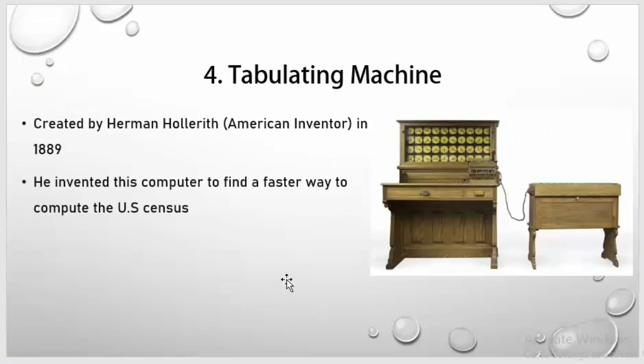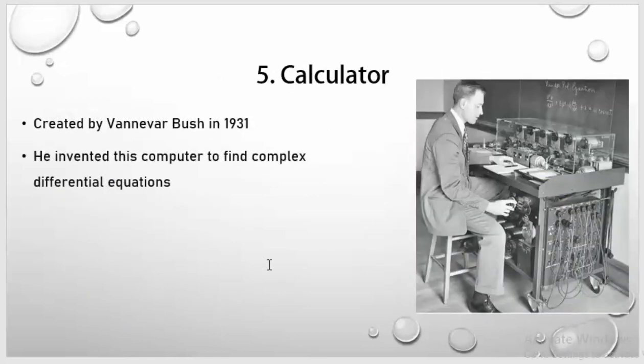Fourth one is Tabulating Machine. It was created by Herman Hollerith. He was an American inventor, and he created this machine in 1889. Basically, he invented this machine to find a faster way to compute the U.S. census, serving his country. He invented this tabulating machine for that purpose.